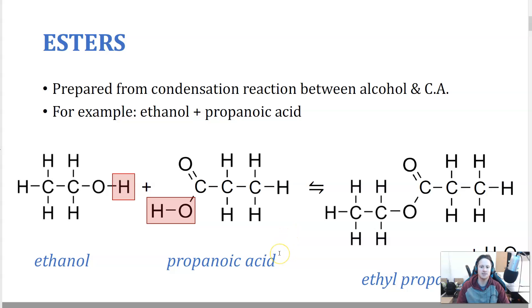So how esters are prepared? From a condensation reaction between alcohols and carboxylic acids. Condensation reactions produce water as a small molecule coming off. So an example of that is ethanol as your alcohol and propanoic acid as your carboxylic acid. Hopefully you can identify those alcohol and carboxylic acid functional groups pretty quickly.